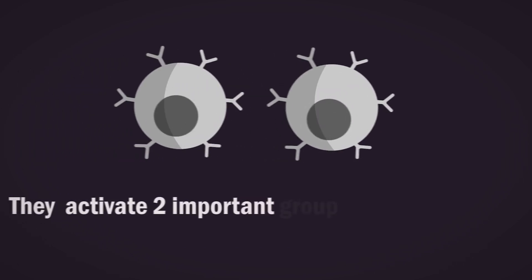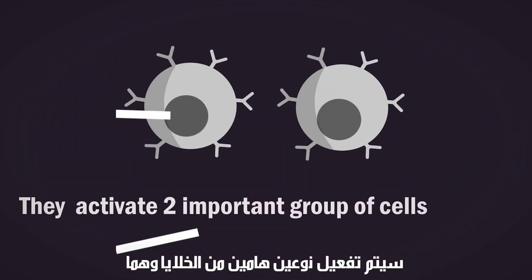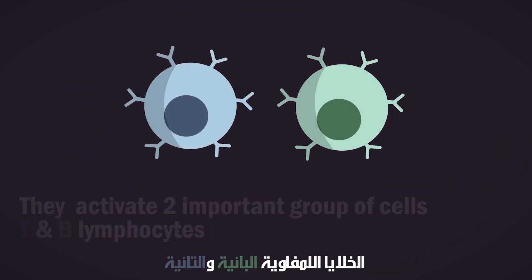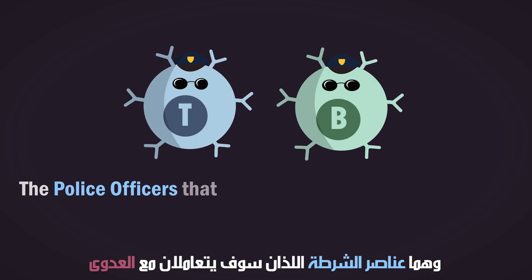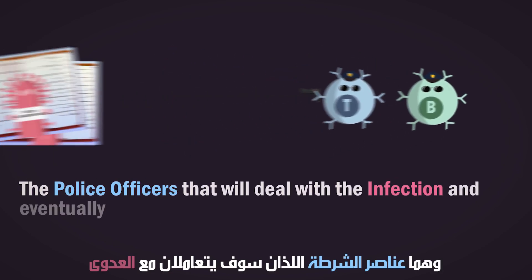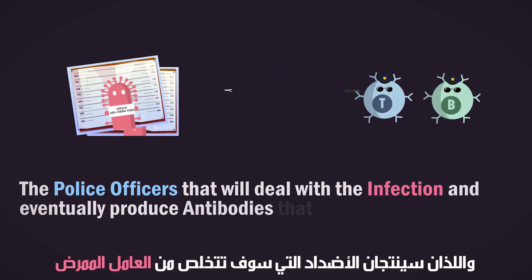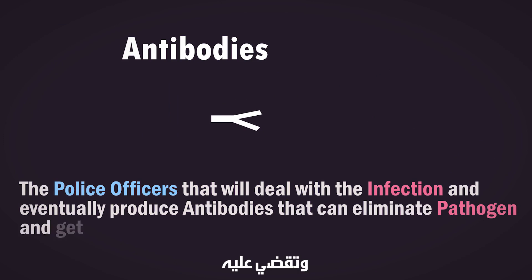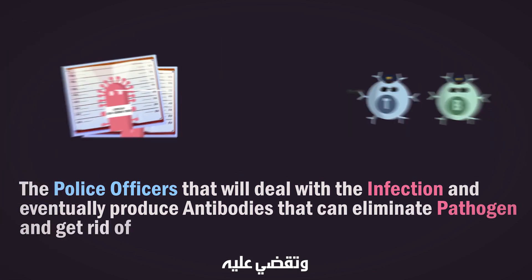They activate two important groups of cells, T and B lymphocytes — the police officers that will deal with the infection and eventually produce antibodies that can eliminate pathogens and get rid of it.